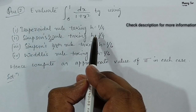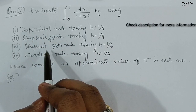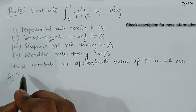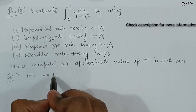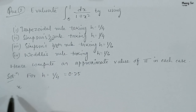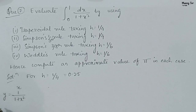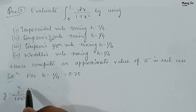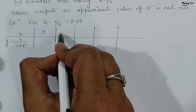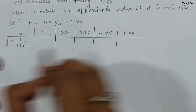We have h = 1/4 for the first two cases and h = 1/6 for the last two cases, so we need to make two tables. Let us prepare the first table for h = 1/4, which equals 0.25. Here we write x and f(x) = 1/(1 + x²), which is y. The x values are: 0, 0.25, 0.50, 0.75, and 1.00.